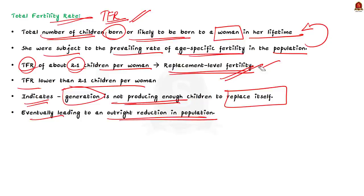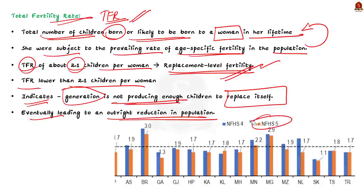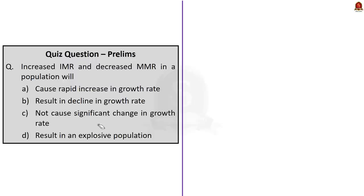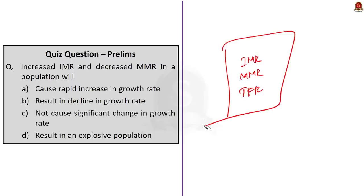According to the National Family Health Survey 5, Bihar has the highest total fertility rate at 3, and the lowest is Sikkim at 1.1. That's all about this news article. It may seem like a factual discussion, but the definitions may be straightforward preliminary questions, and if it is a statement-type question, factual data may be added. That is why I discussed only the relevant points very much needed for your preliminary point of view.